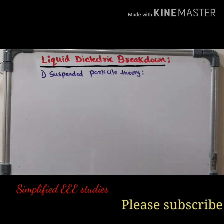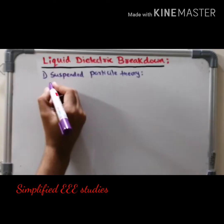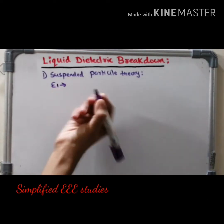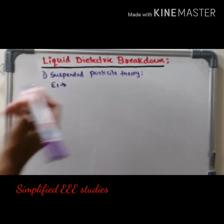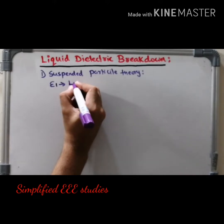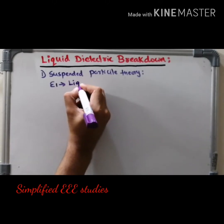Suppose you have a liquid dielectric material. Let the permittivity of the liquid dielectric material be known as epsilon 1. That means your liquid dielectric material is having the permittivity known as epsilon 1.